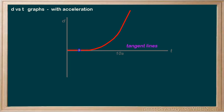At the beginning, the tangent line would just be flat like this, showing no velocity as we sit at the light.